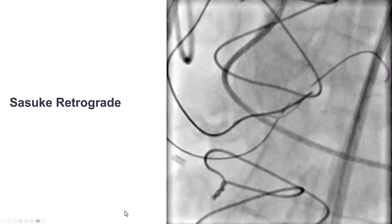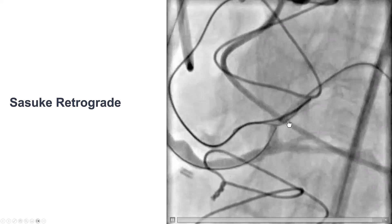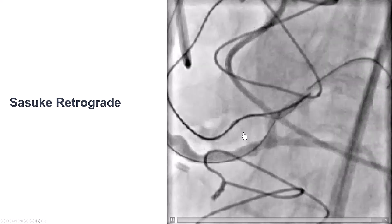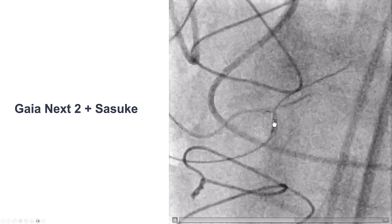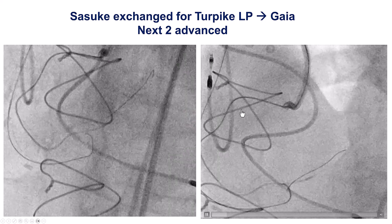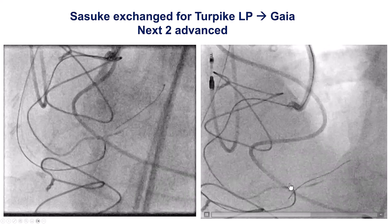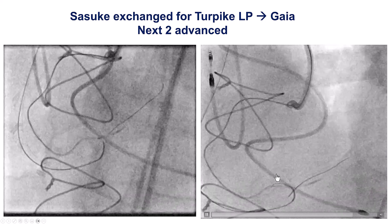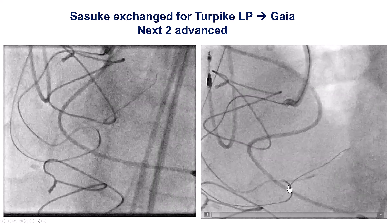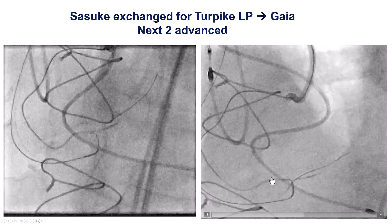So the plan was to switch to retrograde. We advanced a guide wire into the posterior lateral. We noted that the antegrade knuckle had advanced a little too far into the posterior lateral — which would become important later. We used a dual-lumen microcatheter, the Sasuke, trying to direct the retrograde guide wire towards the distal RCA. Using a Gaia NEX2, we made the bend across the bifurcation of the PDA and the right posterior lateral, then switched to a standard Turnpike LP microcatheter. We were then able to direct the Gaia NEX2 next to the antegrade guide wire, with retrograde and antegrade wires now overlapping inside the occluded segment of the distal right coronary artery.